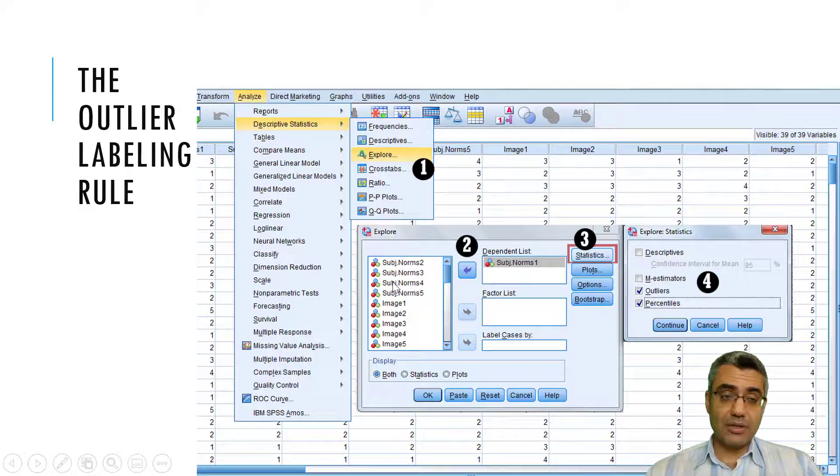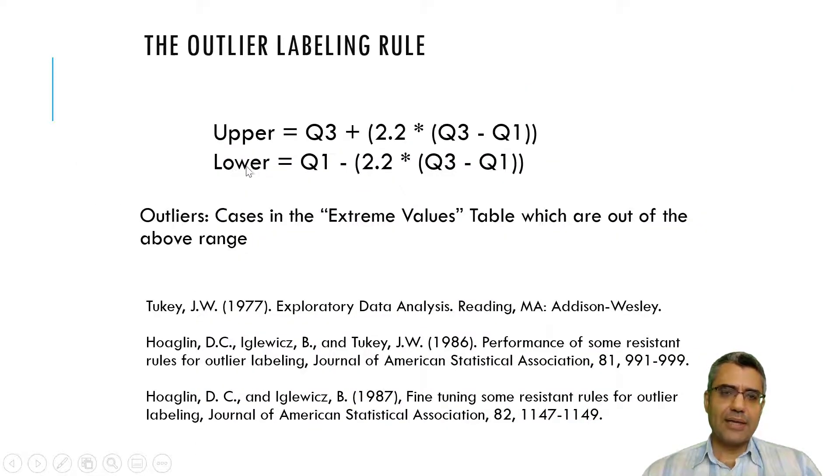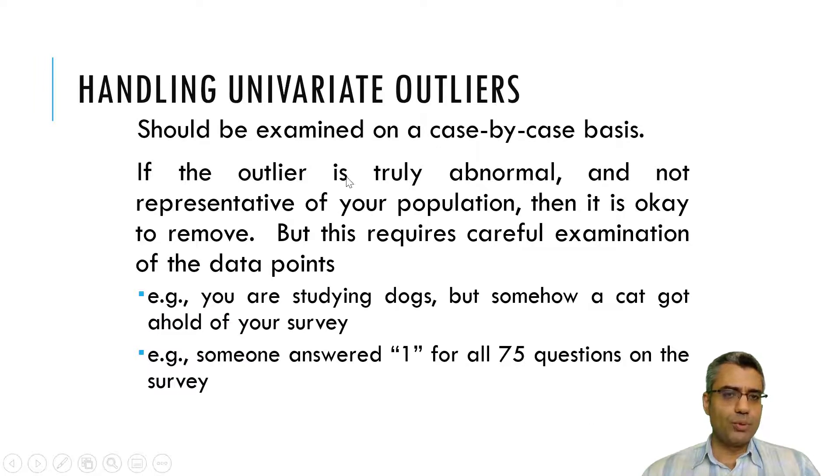There are other methods to identify outliers like the outlier labeling rule. You can follow the steps I have provided here. Cases in the extreme values table which are out of the above range will be the outliers. Or you can refer to the references provided here. So I pass this to you. You can Google, there are so many good materials on the internet about it. It's easy to do.